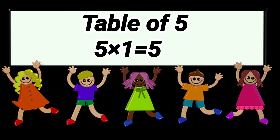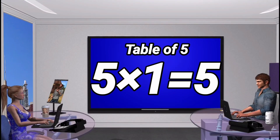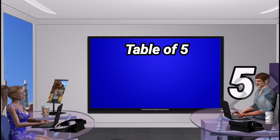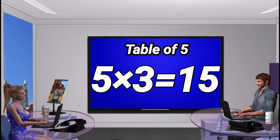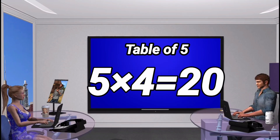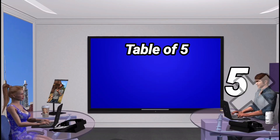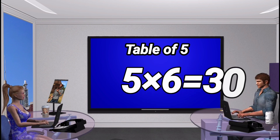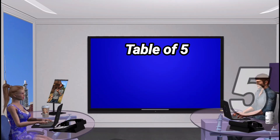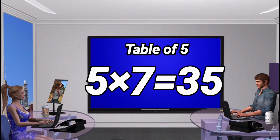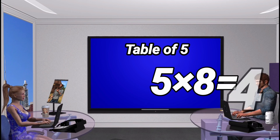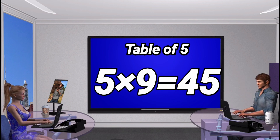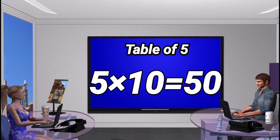Table of 5. 5 times 1 is 5. 5 times 2 is 10. 5 times 3 is 15. 5 times 4 is 20. 5 times 5 is 25. 5 times 6 is 30. 5 times 7 is 35. 5 times 8 is 40. 5 times 9 is 45. 5 times 10 is 50.